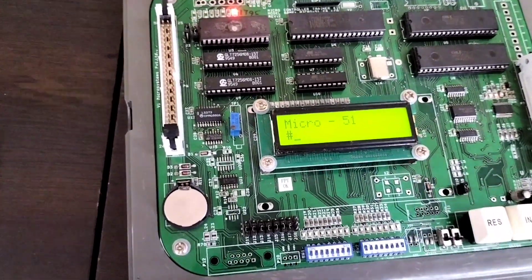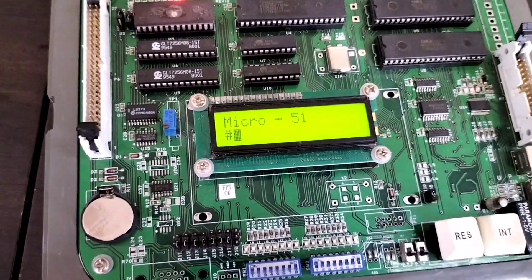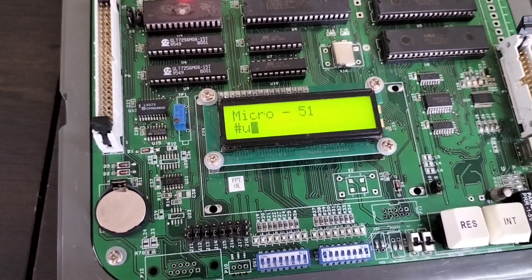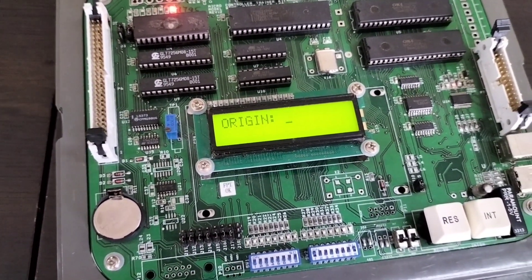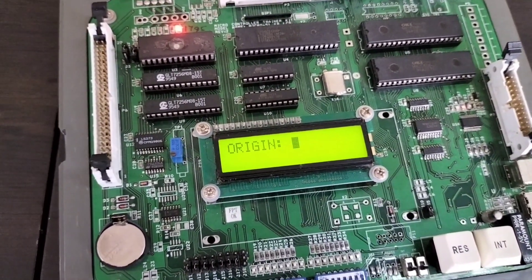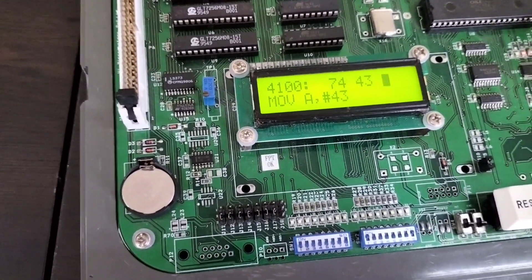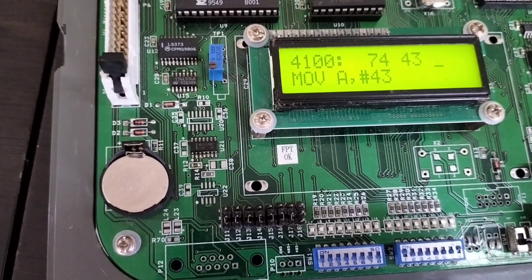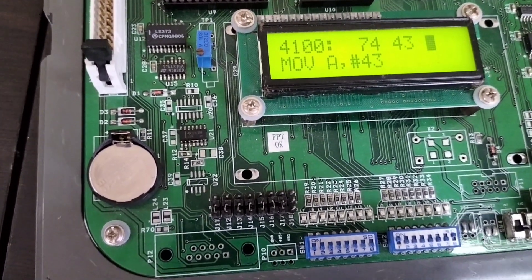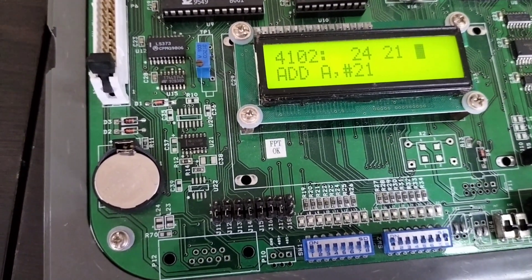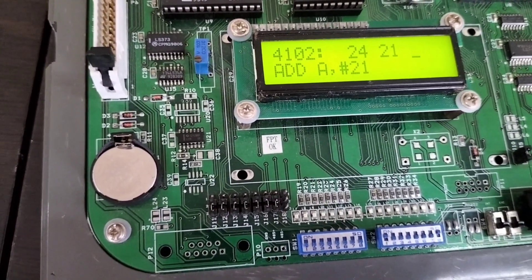First, let us see the previous program and how it has been entered. Give U in the kit, then give the starting address 4100. Now see whether your previously given program is there or not. MOV A, 43 - yes, it is there. ADD A, 21.